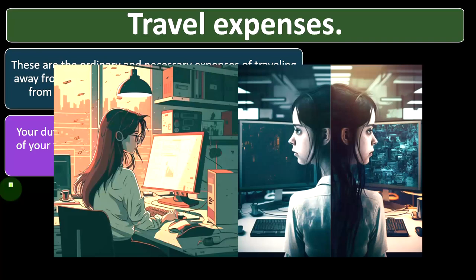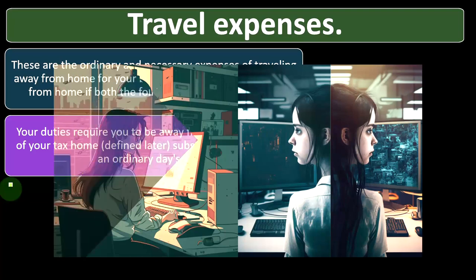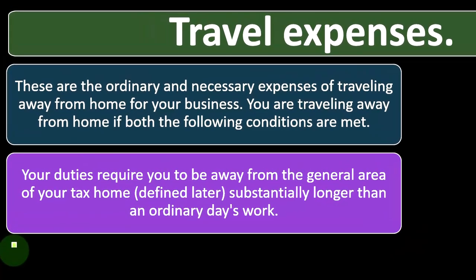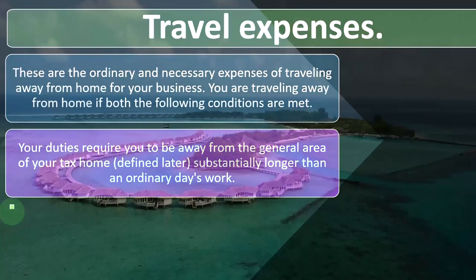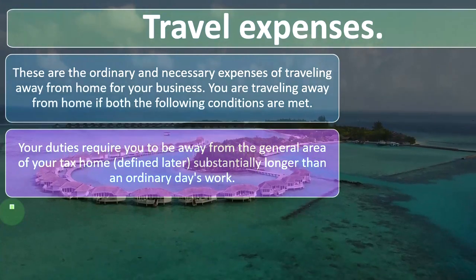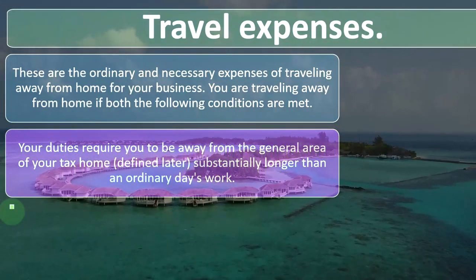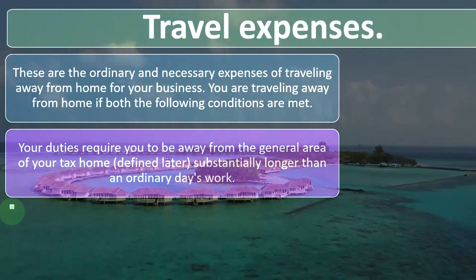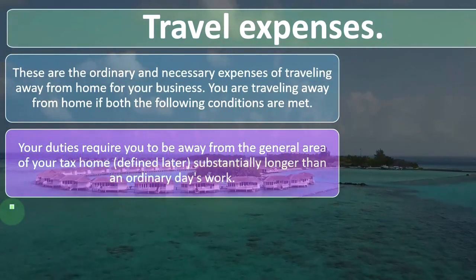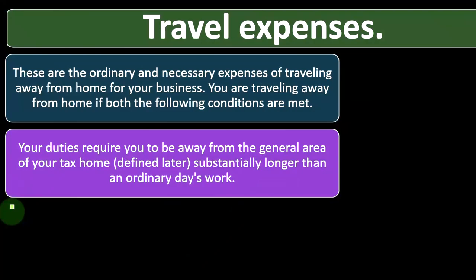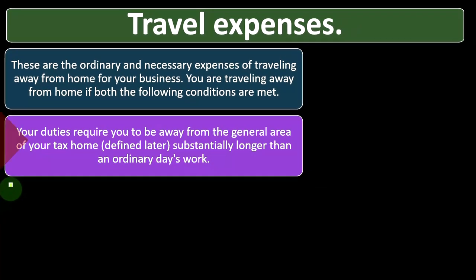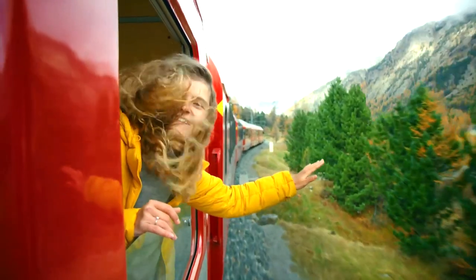You're going to be staying somewhere for a longer period of time, usually an overnight situation, and it's required for you to do it. There can be gray areas — for example, a photographer claiming they were required to go to the Bahamas to photograph beach models. That still seems like a gray area from the perspective of the IRS. What is necessary for travel will be dependent upon the type of industry you are in.